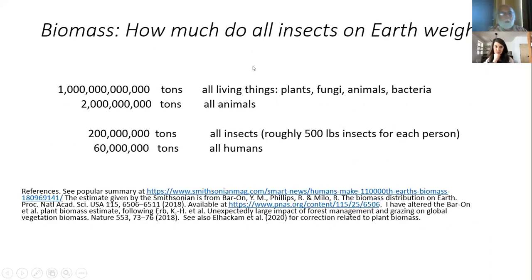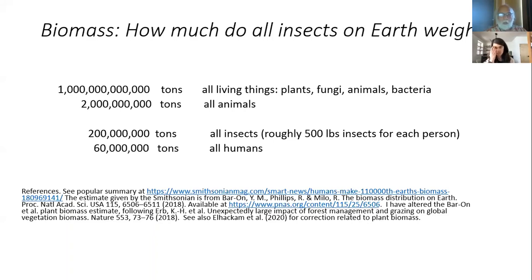Moving on to the third part of my talk on insect biomass: what is the weight of all insects on planet Earth? Each insect weighs a relatively insignificant amount — think about the weight of a mosquito. Yet taken together, there are roughly 500 pounds of insects for each person on Earth. The weight of all people and all insects is quite small in comparison to the weights of other living things like plants, bacteria, and marine animals.